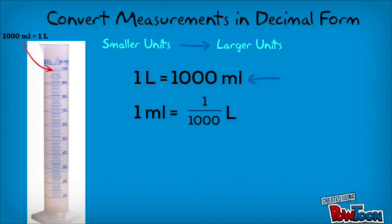Since 1 liter equals 1000 milliliters, then 1 milliliter equals 1 one-thousandth of a liter.